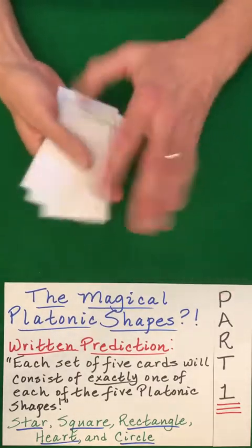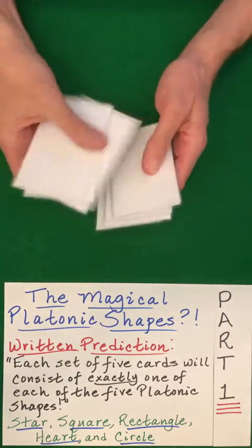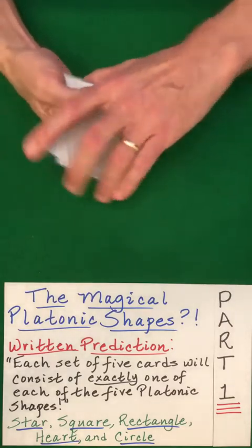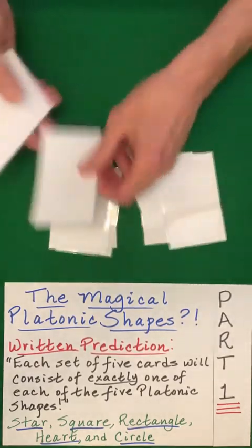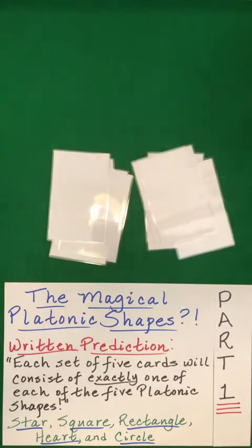and then you just randomize them thoroughly, separating them into groups of five will always result in each group of five consisting of exactly one of each shape. Isn't that amazing?